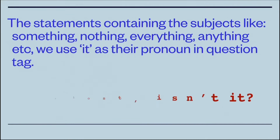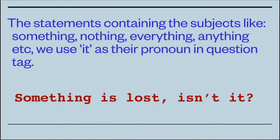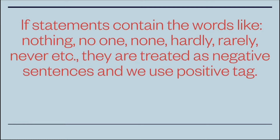Statements containing subjects like 'something,' 'nothing,' 'everything,' or 'anything' use 'it' as their pronoun in the question tag. For example, 'Something is lost' — the question tag is 'isn't it.' If statements contain words like 'nothing,' 'no,' 'none,' 'hardly,' 'rarely,' 'never,' or 'barely,' they are treated as negative sentences and we use a positive tag.